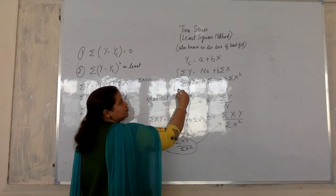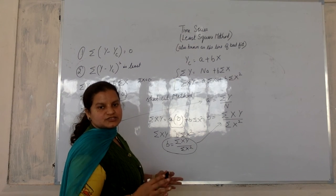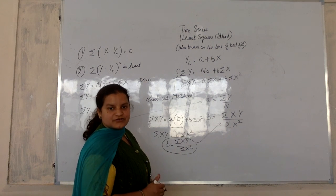Basically we use normal equations. But when your summation x is equal to zero, in that case your shortcut method derives.